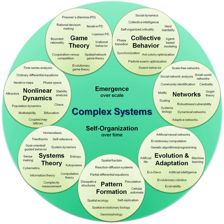As an interdisciplinary domain, complex systems draws contributions from many different fields, such as the study of self-organization from physics, spontaneous order from the social sciences, chaos from mathematics, and adaptation from biology, among many others. Complex systems is therefore often used as a broad term encompassing a research approach to problems in many diverse disciplines, including statistical physics, information theory, nonlinear dynamics, anthropology, computer science, meteorology, sociology, economics, psychology, and biology.